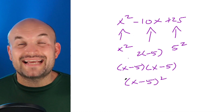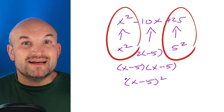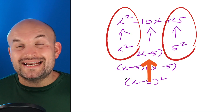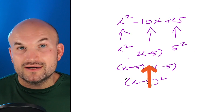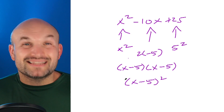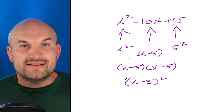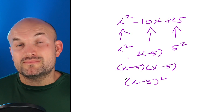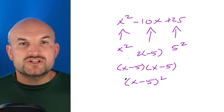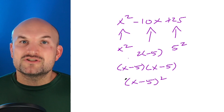In the next example the first term is again squared, the last term is squared, and the middle term is 2 times negative 5 — since (−5)² is positive 25. So this is another perfect square trinomial, and since the middle term is negative it factors as (x − 5)(x − 5), or (x − 5)².